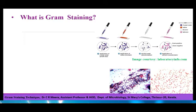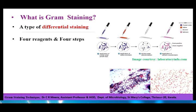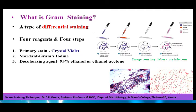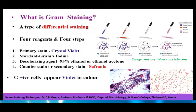Gram staining is a type of differential staining which uses four reagents and has four steps. The four reagents include: the primary stain crystal violet, the mordant Gram's iodine, a decolorizing agent like 95% ethanol or ethanol-acetone solution, and the counter stain — also called the secondary stain — safranin. Gram positive cells will appear violet in color and Gram negative cells will appear red in color by the Gram staining technique.